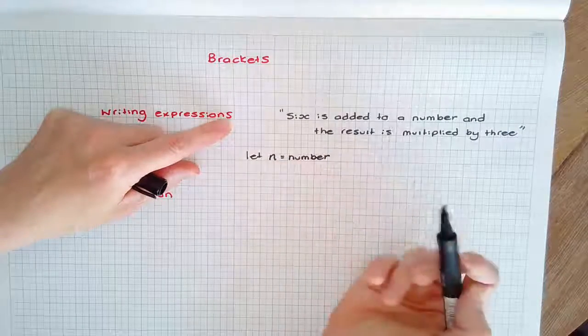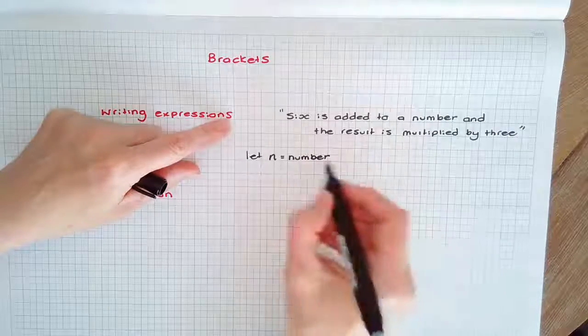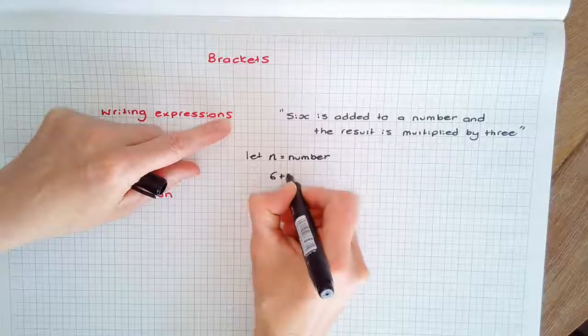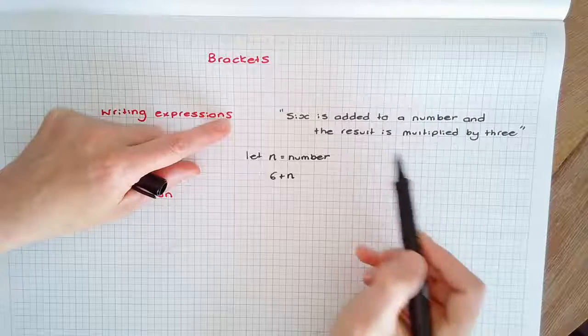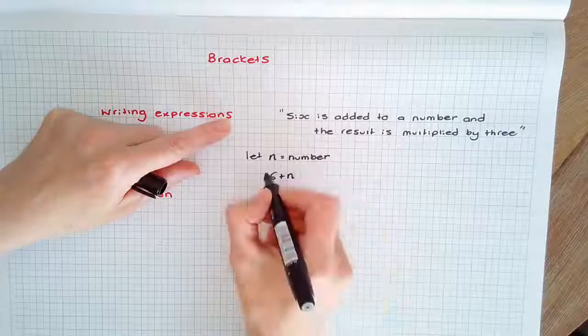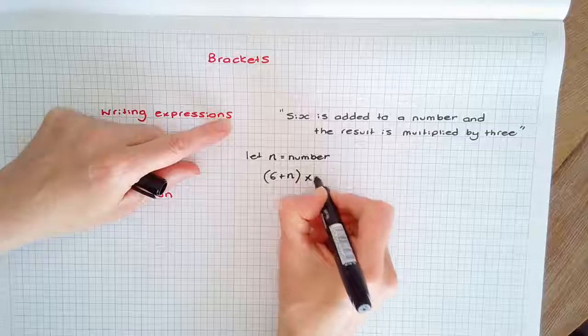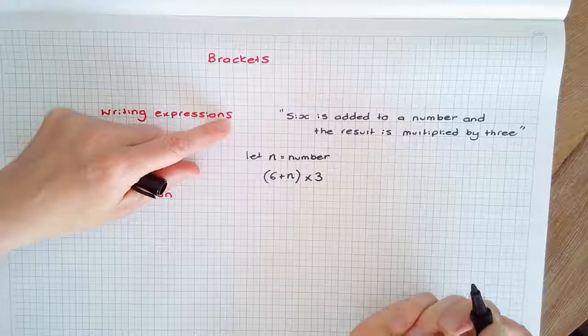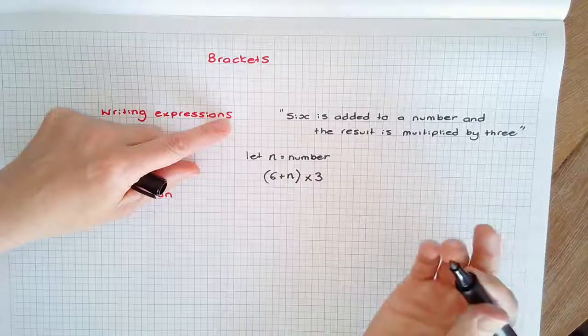It says six is added to a number, which would be 6 + n, and then the result is multiplied by three. We would need brackets around the 6 + n, multiplied by three, to follow the correct description.